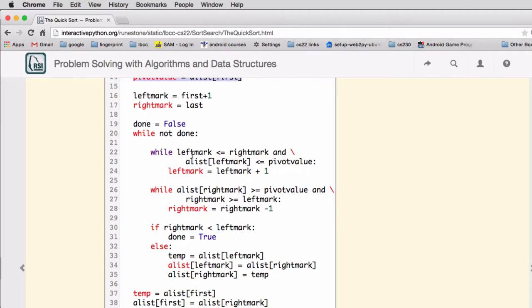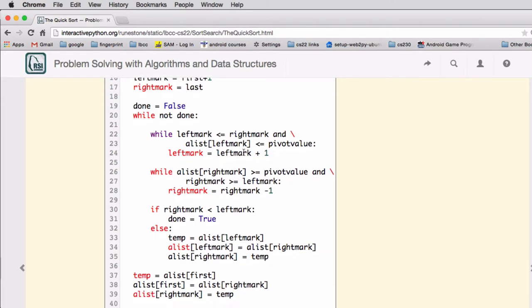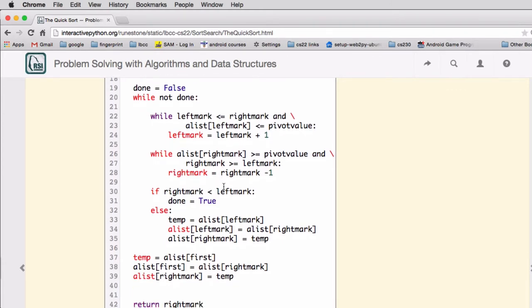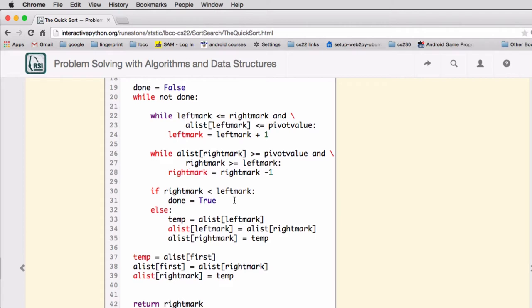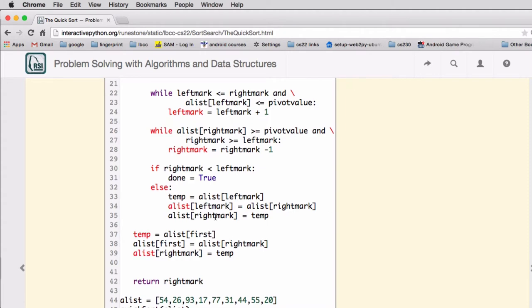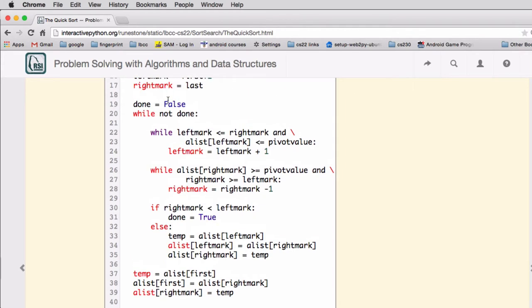So this is the work we have to do. So while we're not done, it's going to advance the left mark until it finds something out of place. So that's the first loop. The second loop is going to move the right mark until it finds one out of place. And it ends early if it finds that they've crossed each other. So that's what this is testing for once these two loops are done. And then, otherwise it swaps the left and right marked values. And then it goes back and while not done.